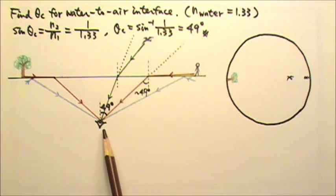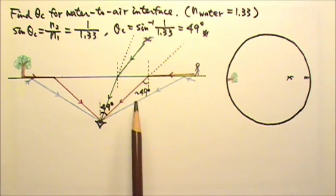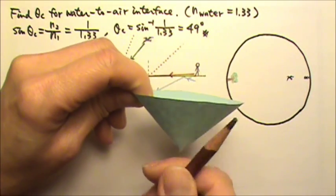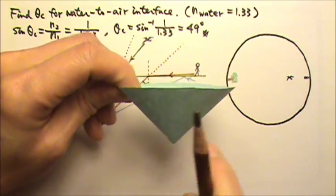So the next time you go swimming, try this: get under the surface and look up. You will see that the sky looks round at a 49-degree angle to the center all the way around.